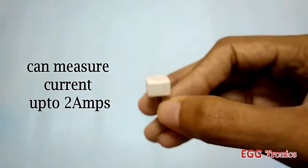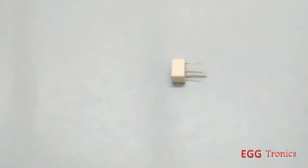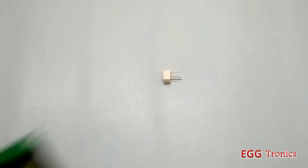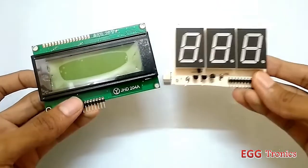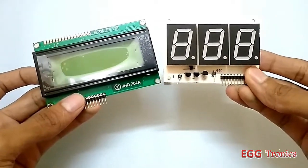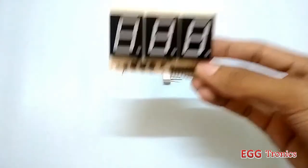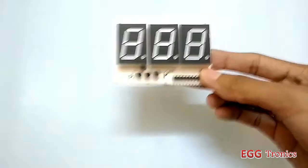Next we need something to display the measured current. There are two options: LCD display or 7 segment display. I'll be using the 7 segment display because it is used in most power supplies and the measured value is easily visible.